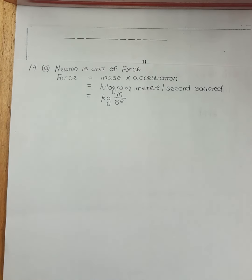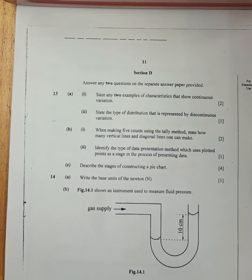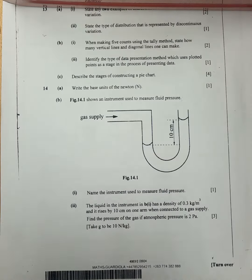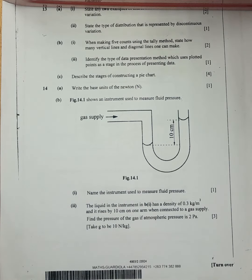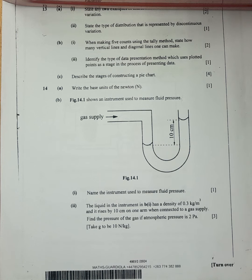Part b: Fig 14.1 shows an instrument used to measure fluid pressure. In part one, we name the instrument — it is known as a manometer. It is also important to know that the instrument used to measure atmospheric pressure is called a barometer. Part two: the liquid in the instrument has a density of 0.3 kg per cubic meter and rises by 10 centimeters on one arm when connected to a gas supply. We are to find the pressure of the gas, given atmospheric pressure is 2 pascals and gravity is 10 N/kg.